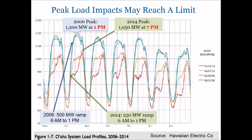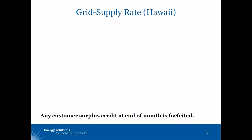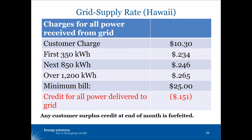The Hawaii Commission responded with a significant change in how solar customers are served, with what's called the grid supply rate that applied for new customers installing solar, while grandfathering in all of the customers who installed net metering prior to the beginning of last year. The customer charge is the same as it is for all customers.